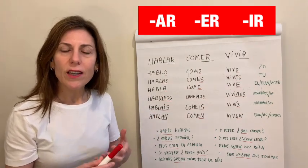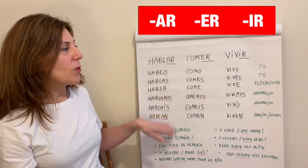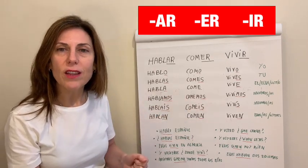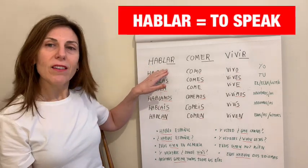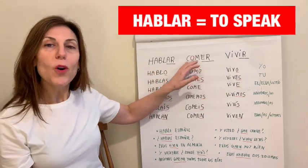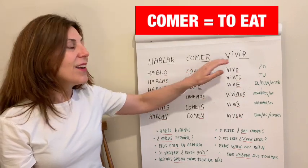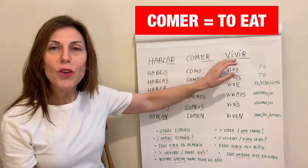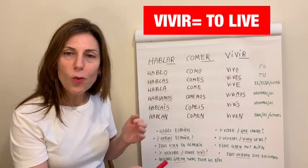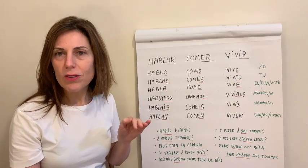These are the regular verbs, and the regular verbs always follow the same rule. Here we have three examples that we are covering in today's video: hablar, which means to speak; comer, which means to eat; and vivir, which means to live. We are also going to see how we apply this conjugation with a few examples.